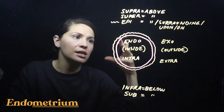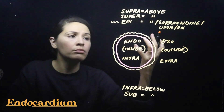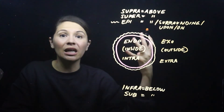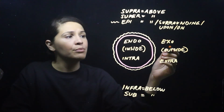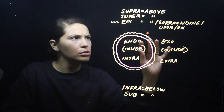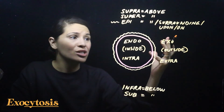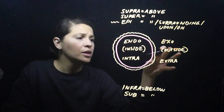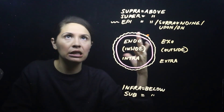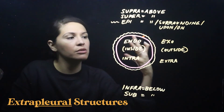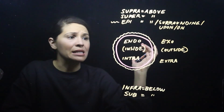The opposites — meaning outside — are exo and extra. An example of intra is intrapulmonary pressure, meaning pressure that exists within the lungs. Exo is not used too much for naming anatomical structures but more for physiological processes, like exocytosis — when things are being pushed out of cells. An example of extra would be extra pleural structures surrounding the lungs, such as ribs and associated muscles.